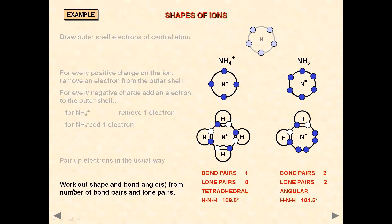Next, work out the shape and bond angle from the number of bond pairs and lone pairs. For NH4⁺, there are four bond pairs and all electrons are involved in covalent bonds, so there is no lone pair at all. When there are four bond pairs, the shape is tetrahedral and the bond angle is 109.5 degrees. For NH2⁻, there are two bond pairs and two lone pairs. Since we don't show lone pairs in the shape, it is going to be bent, V-shape, or angular, with a bond angle of 104.5 degrees.